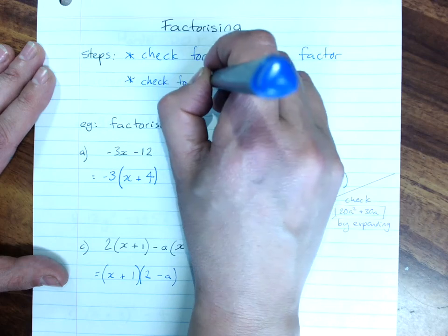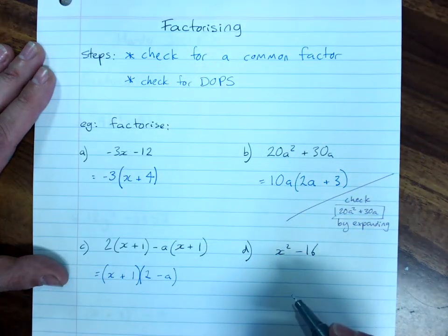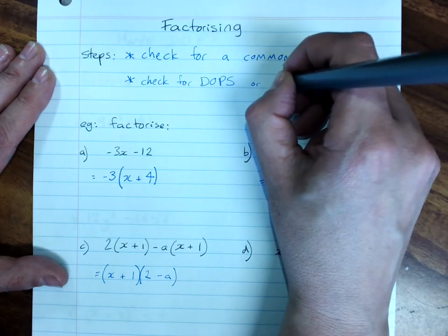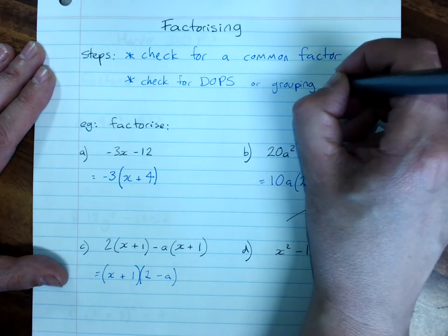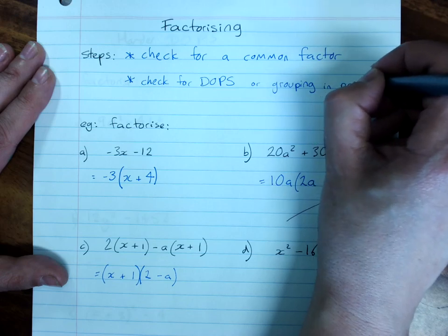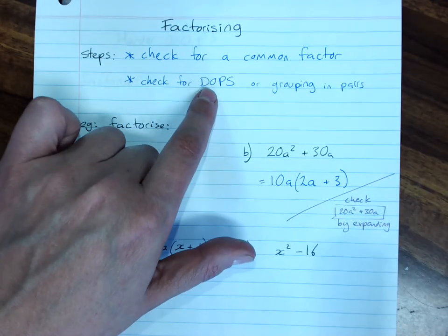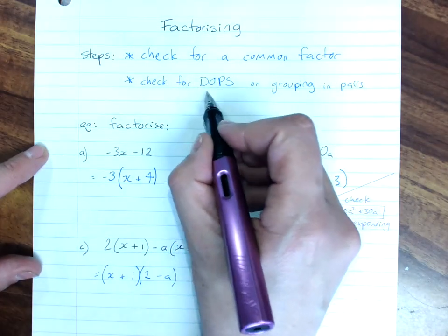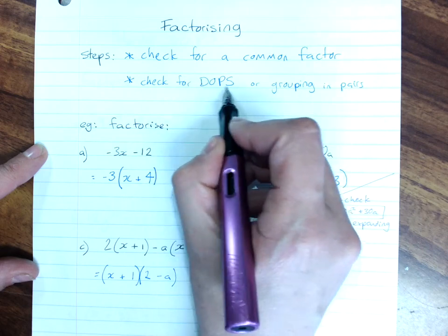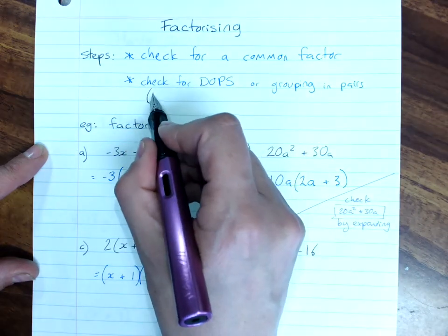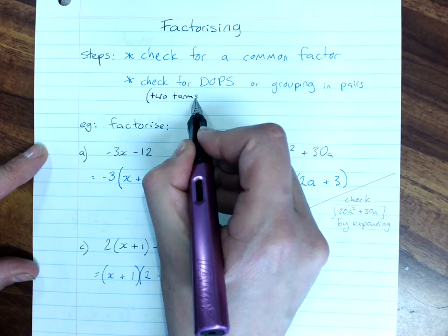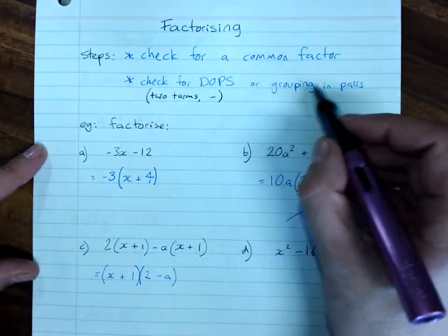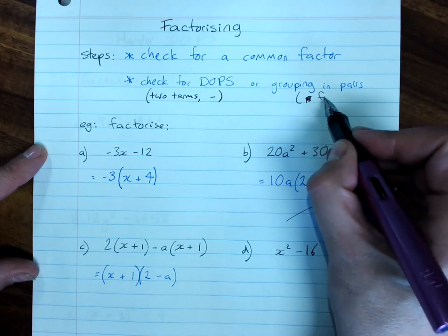check for difference of perfect squares or grouping in pairs. I'm not sure whether I'll get to grouping in pairs today. If it's a difference of perfect squares, then the things that would be leaping out at you is two terms with a minus in between.